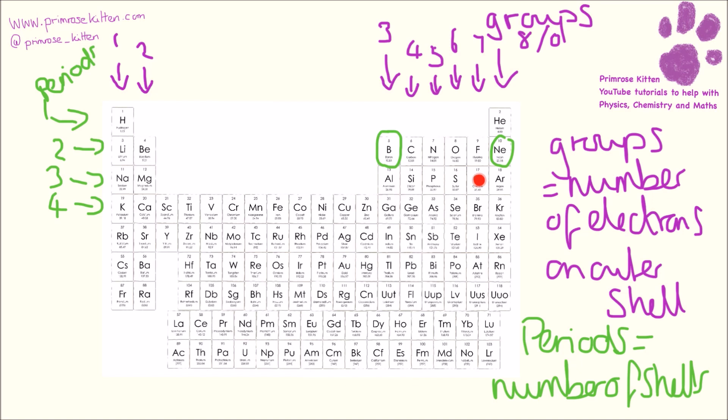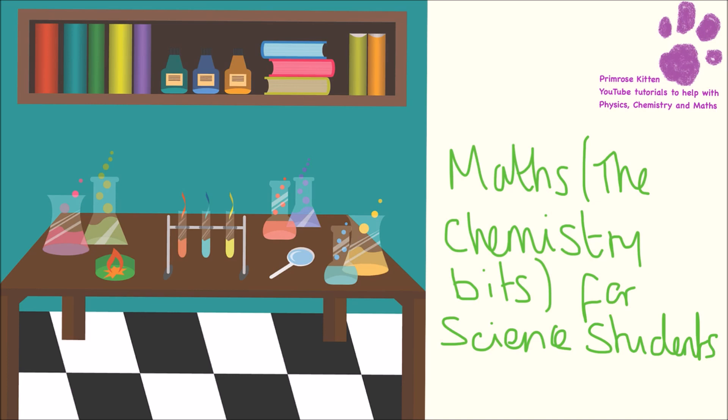Period number three also has eight electrons, and again, the number of electrons we can fit into the third shell is eight. So the periodic table will give you loads and loads of information if you know how to read it properly. If you like this video, for loads more questions like this, you can get my book — Maths and Chemistry Bits for Science Students — available in book format, video format, or over in my classroom.